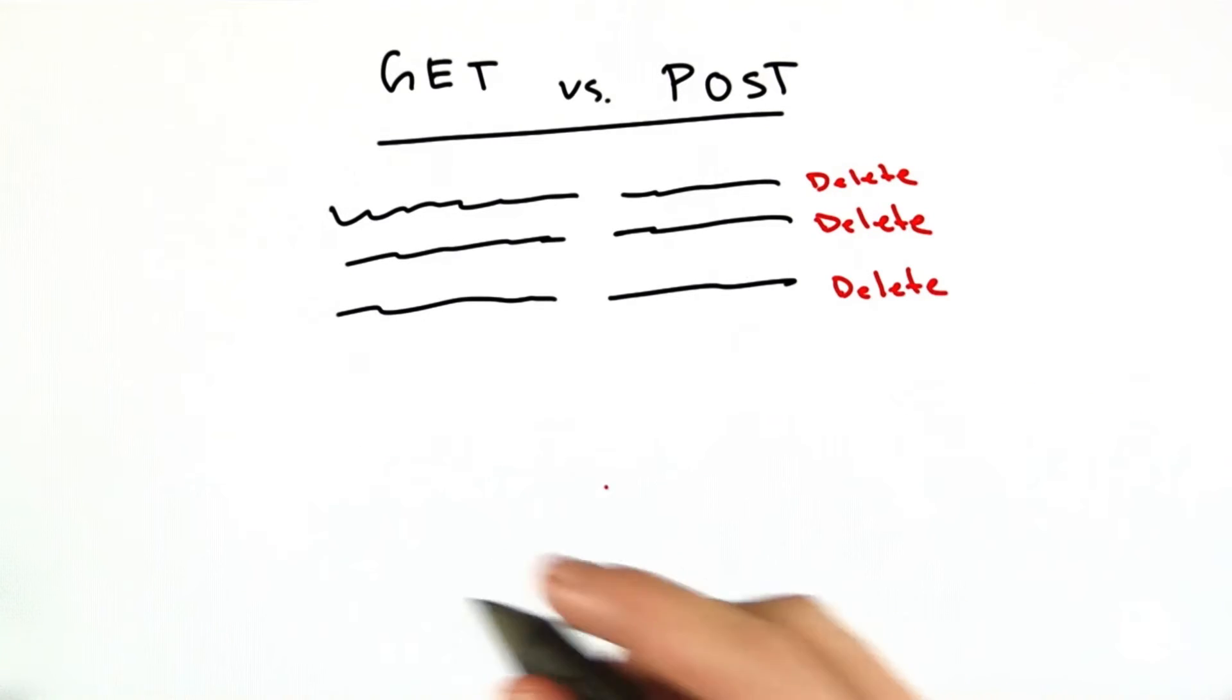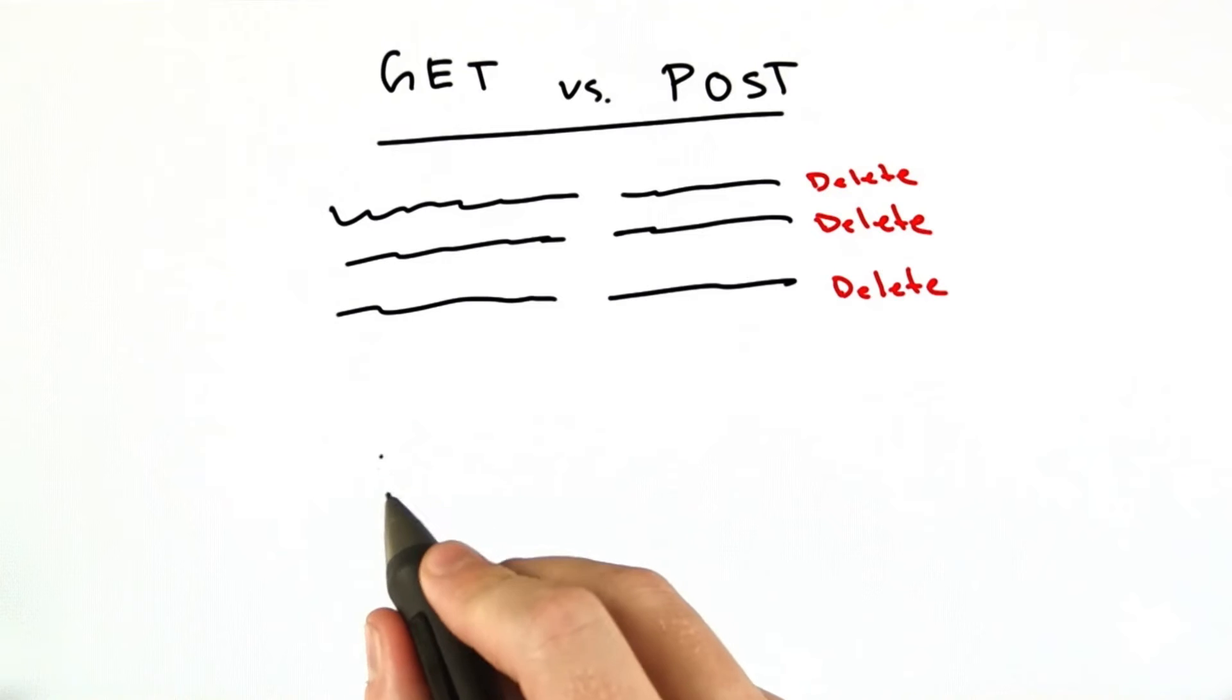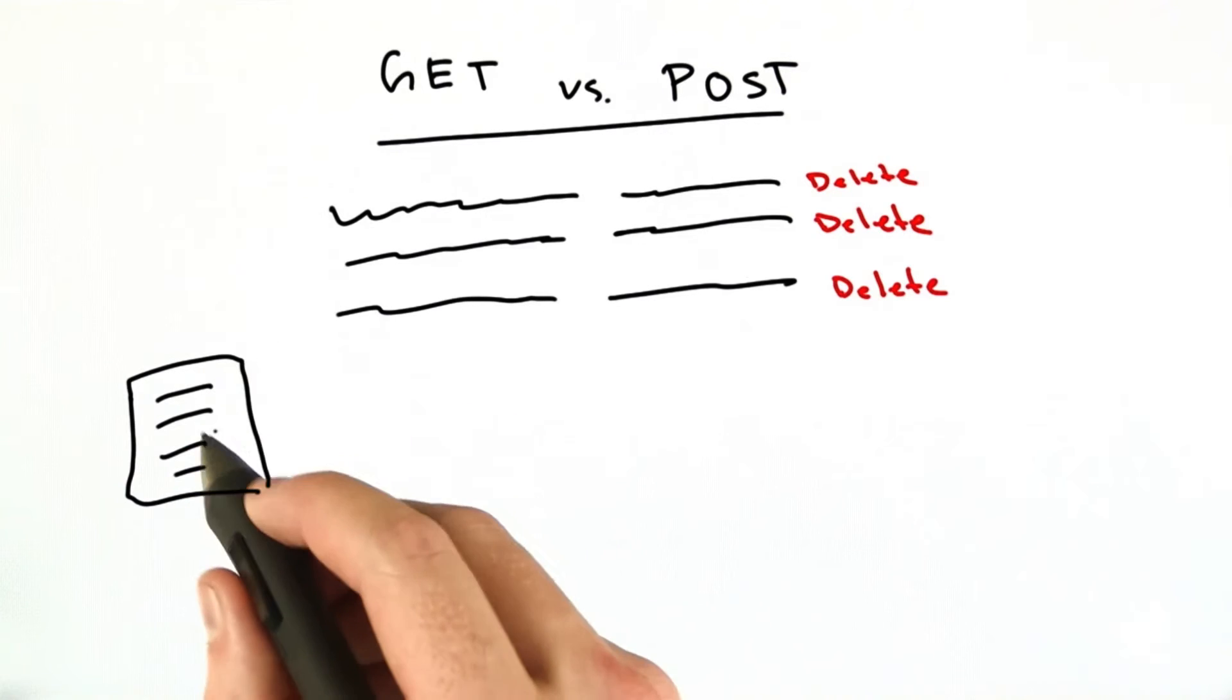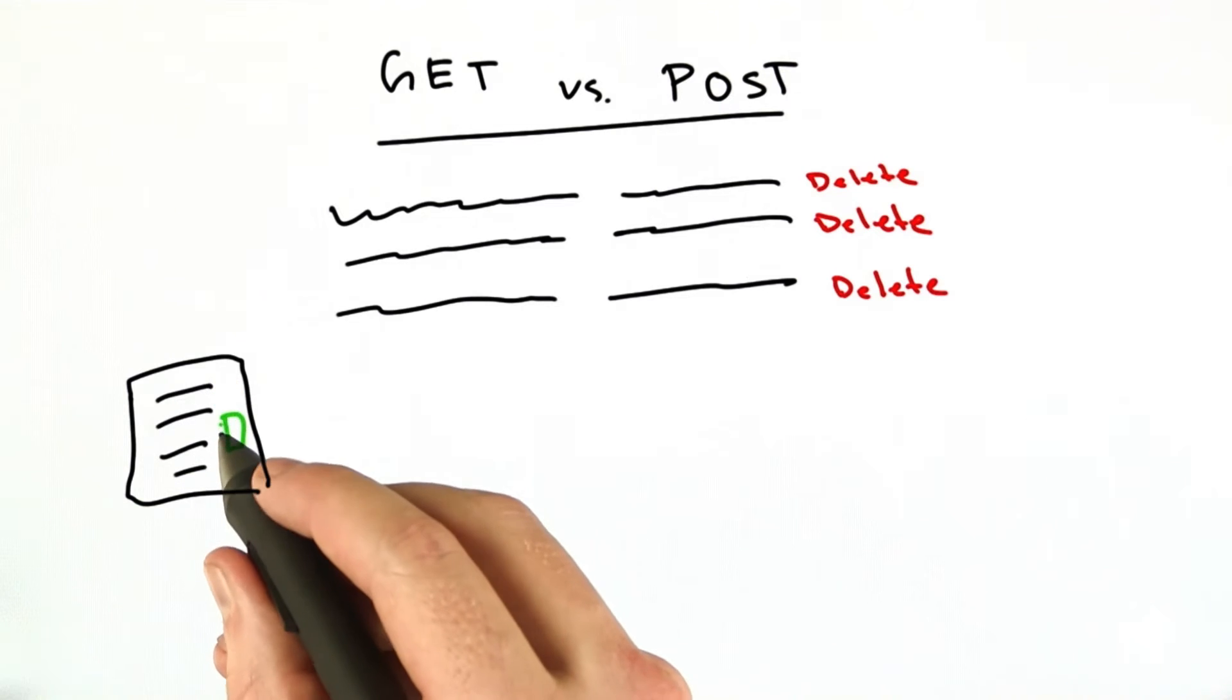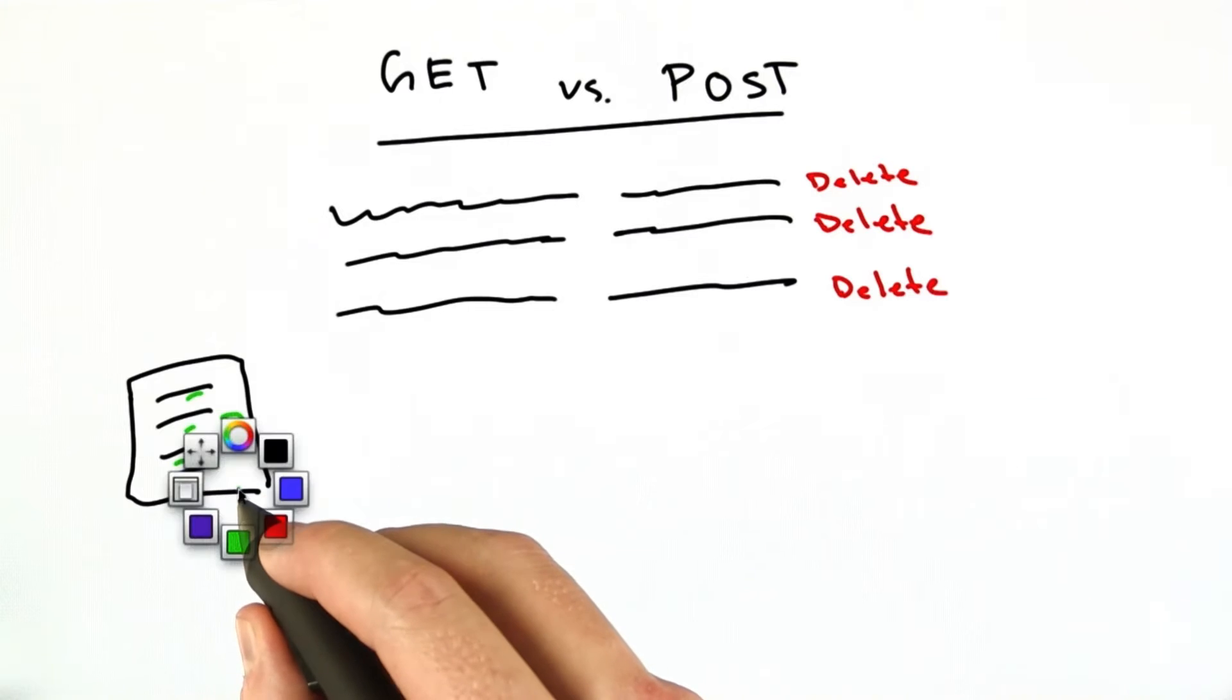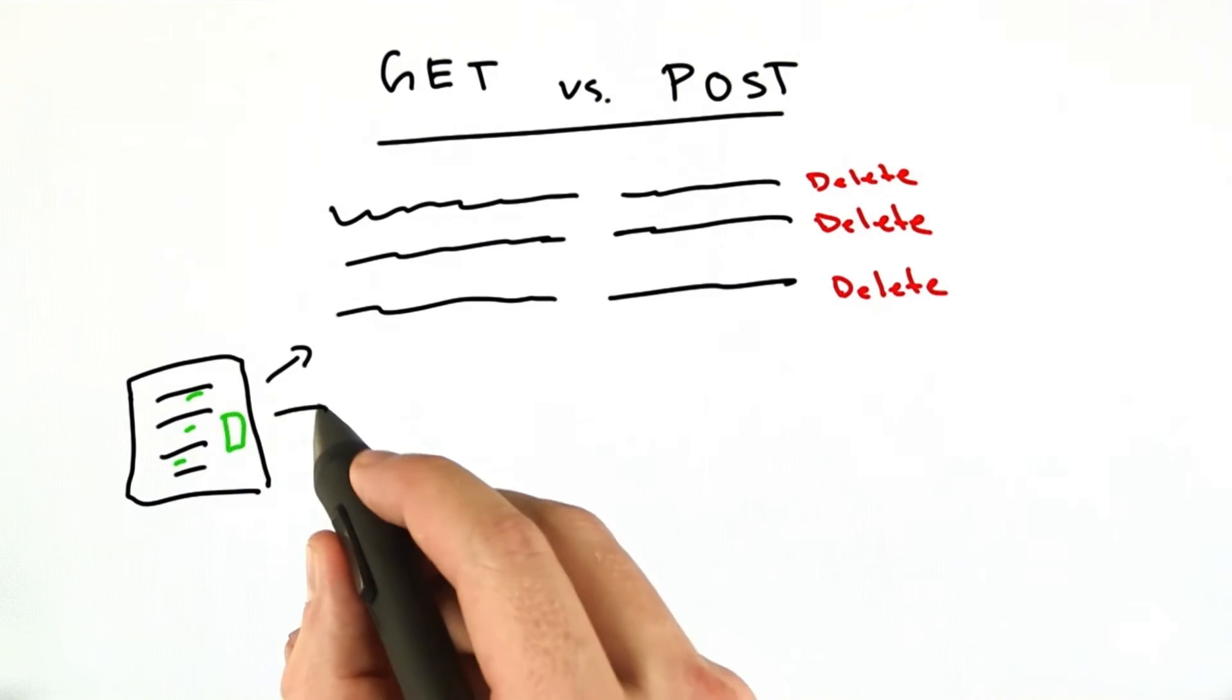Well, there was another program out at the time called Google Web Accelerator, and what that was is it was a browser plug-in that would sit in your browser, and while you're browsing, let's say this is the browser you're looking at. Let's add a picture here. While you're browsing a bunch of text, there might be some links throughout the document.